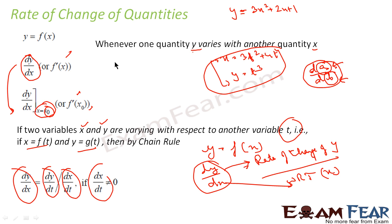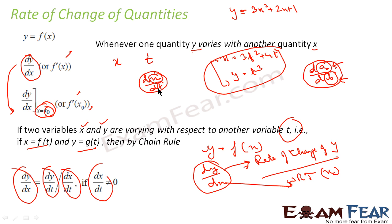For example, I have a distance-time graph where x is distance and t is time. When I say dx/dt, I am saying rate of change of distance with respect to time, and this is nothing but speed.